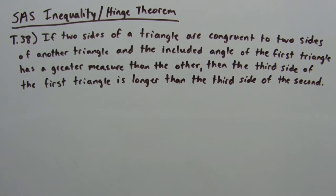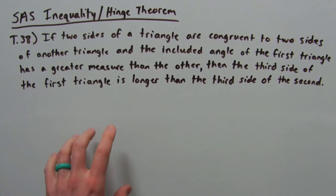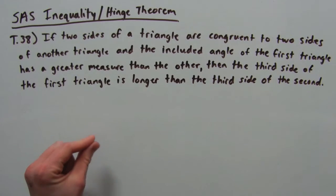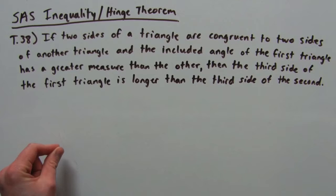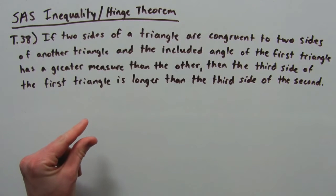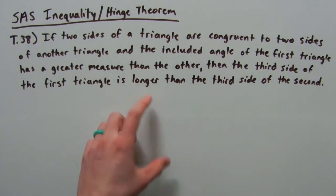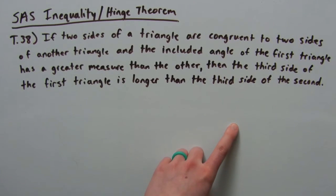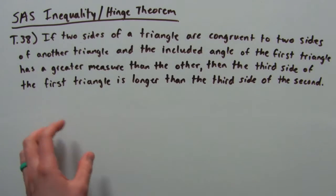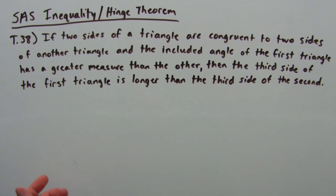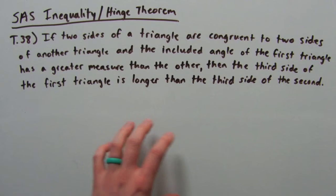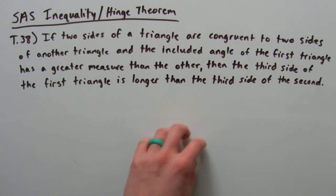The SAS Inequality Theorem, otherwise known as the hinge theorem, says that if two sides of a triangle are congruent to two sides of another triangle, and the included angle of the first triangle — that's the angle between the two specified sides — has a greater measure than the corresponding angle on the other triangle, then the third side of the first triangle is longer than the third side of the second triangle.